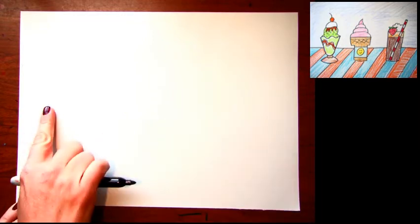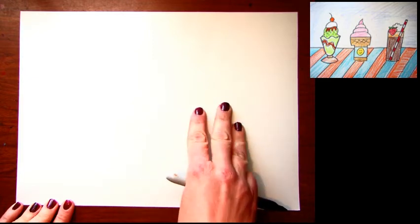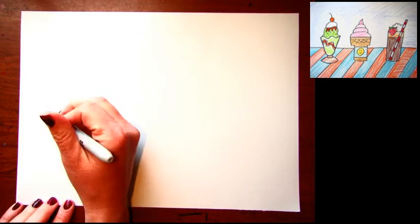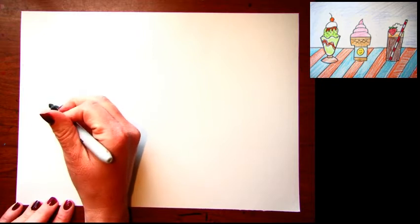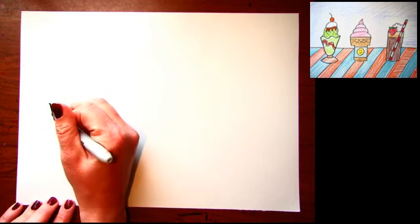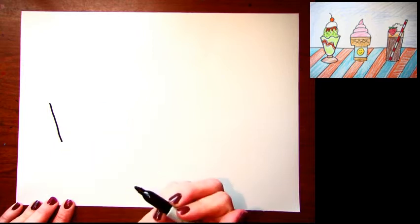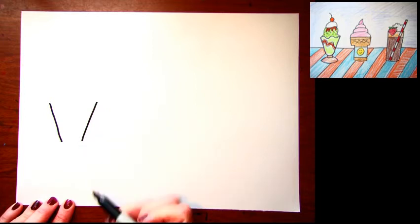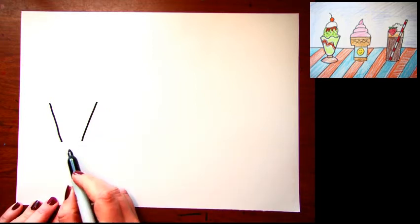Today I'm gonna show you how to make three ice creams. We're gonna put one here in the middle and then on the side. We'll start with the first one on the left, this one's gonna be a hot fudge sundae. We're gonna start with the sundae glass first. You're gonna make a diagonal line going down and then another one going toward it, almost like you're making the letter V.